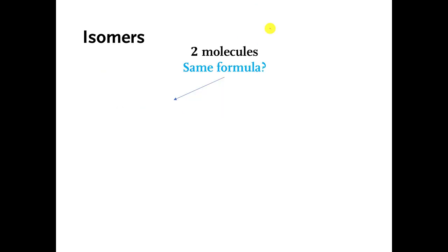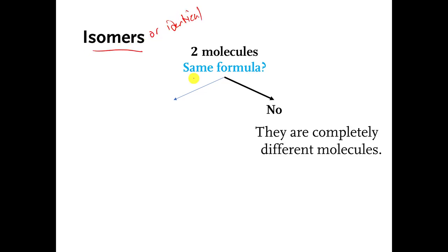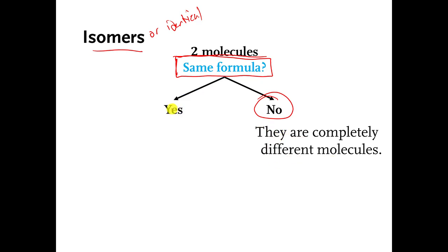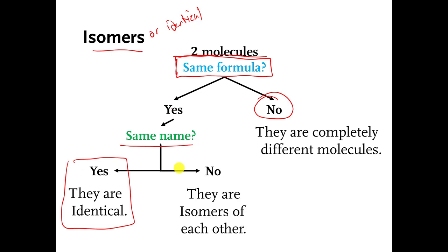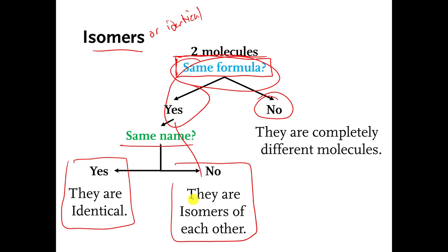Here's a flowchart. If I show you two molecules and ask whether they are isomers or identical, you basically have to ask a series of questions. First: do they have the same formula? If not, they're completely different molecules. If they do have the same formula, then ask: do they have the same name? If yes, they are identical. If they don't have the same name but do have the same formula, then they're isomers of each other.